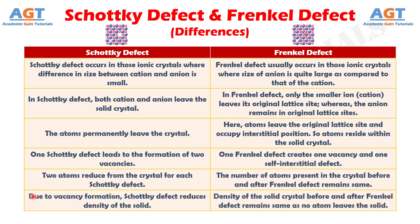Number 6: Due to vacancy formation, Schottky defect reduces the density of the solid, whereas the density of the solid crystal before and after Frenkel defect remains the same, as no atom leaves the solid.